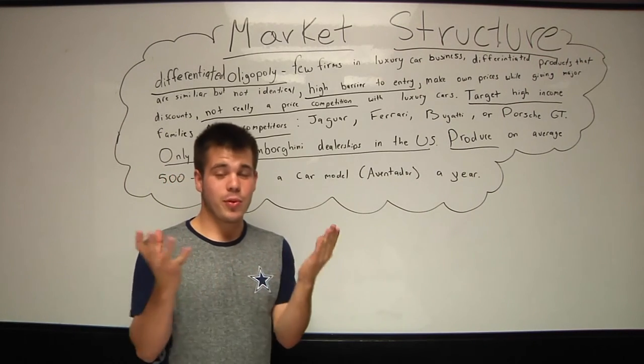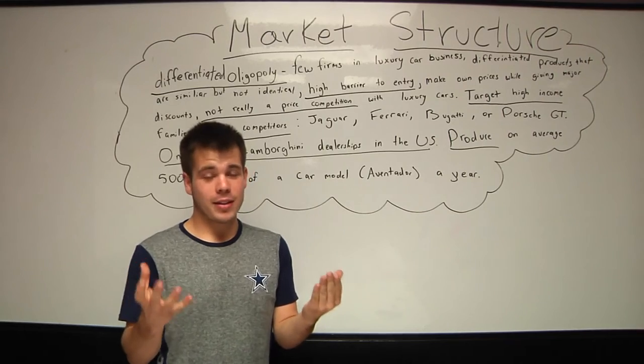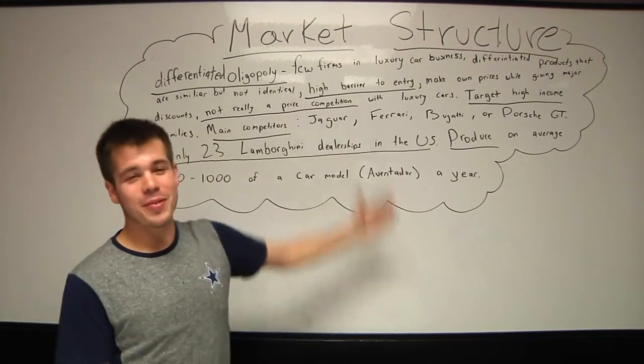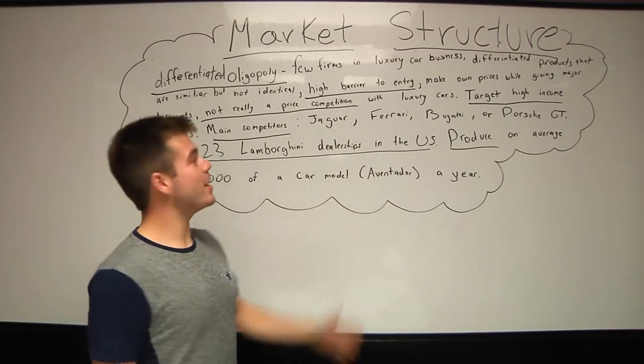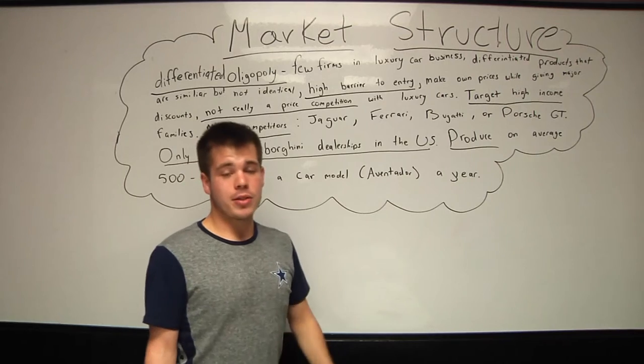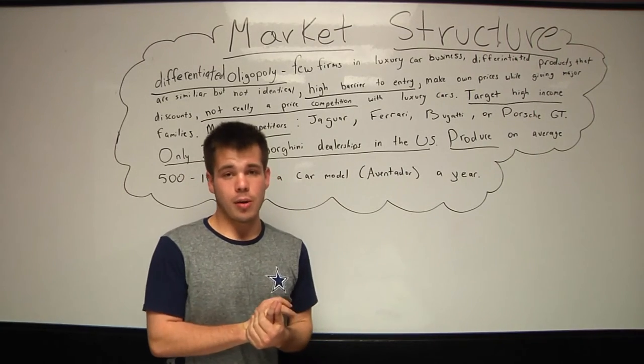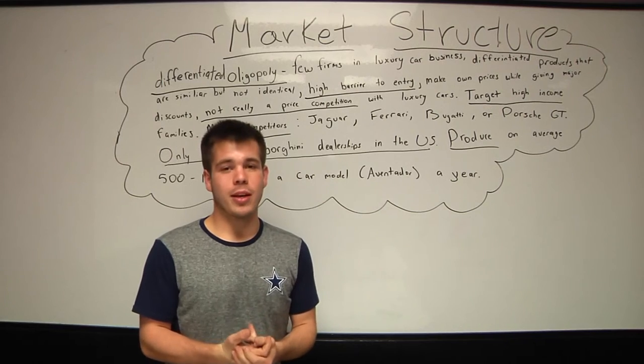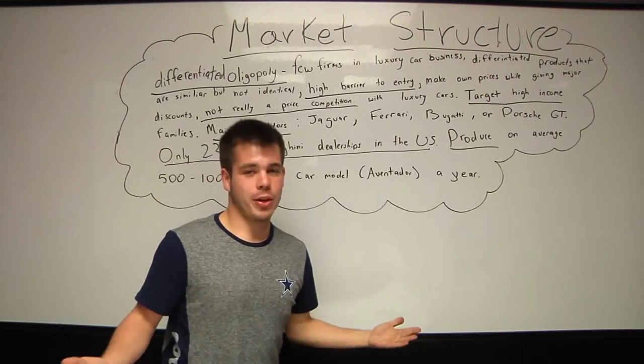For instance, you could have two very fast cars that cost about the same amount of money that look the same, but they're not the same because they're from two different companies like Porsche and Lamborghini. So Lamborghini also has a high barrier to entry in the luxury car business because without an established name, you wouldn't really be able to sell a million-dollar cars or half a million-dollar cars.